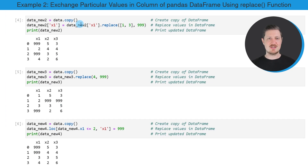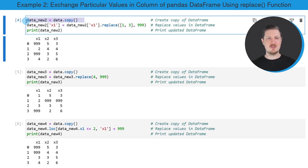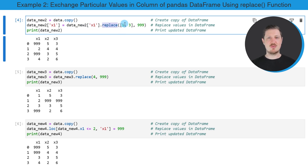So in this code box, as in the previous example, I'm first creating a duplicate of our input data frame. And then in the next step, I'm specifying that I want to replace values in the column x1. And then I'm using the replace function. And within the replace function, I'm specifying a list of values that should be replaced by another value. So in this case, I want to replace the values 1 and 3 by the value 999.